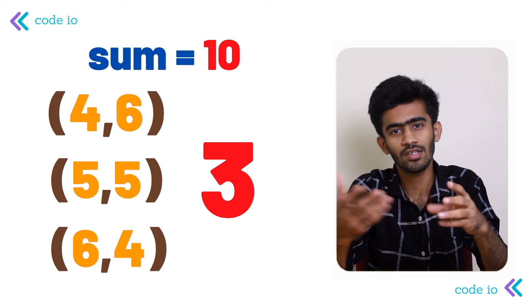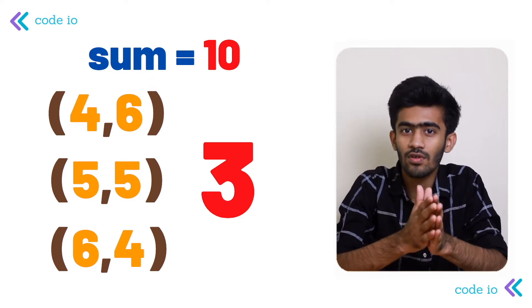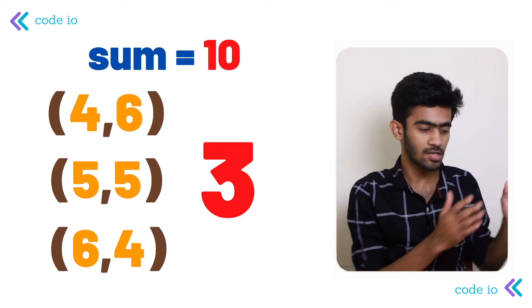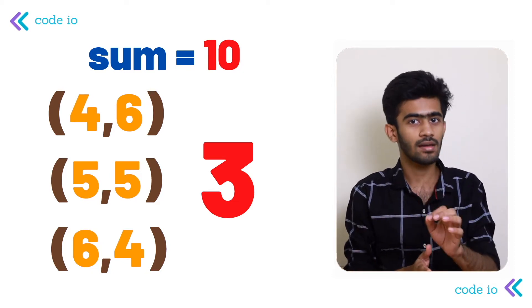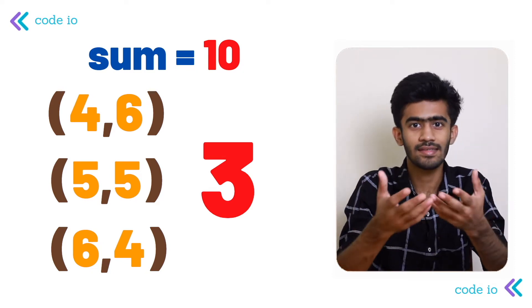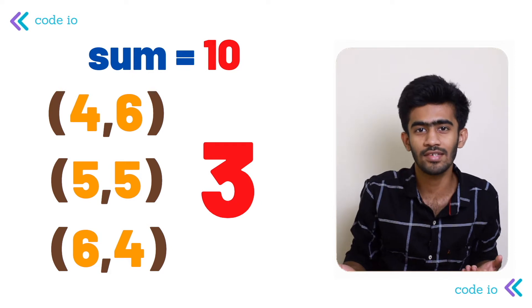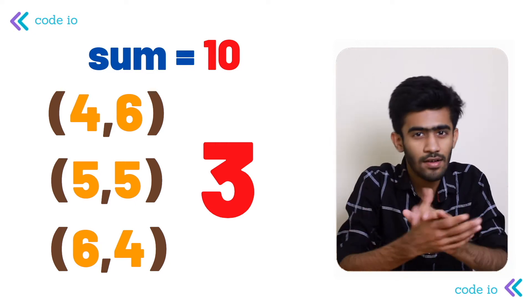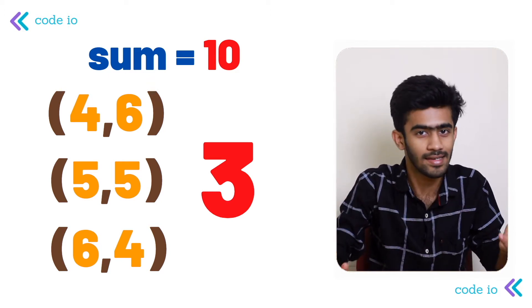We have to return the count of the total number of pairs, and hence these three pairs result in a return value of 3. Along with that we also print these pairs if they exist. But if the sum is 100, that is not at all possible because the maximum value on each die is 6, so 6 plus 6 gives 12, not 100. Any sum greater than 12 is not possible, so we return minus 1 as the count.